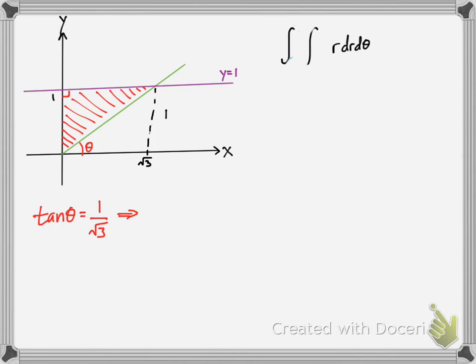We have the same thing, tangent of theta equals y over x, y being there because the triangle's flipped. That means theta equals pi over 6.